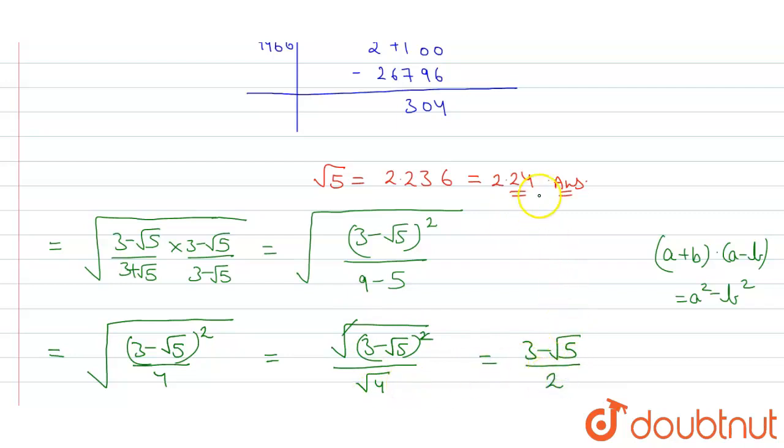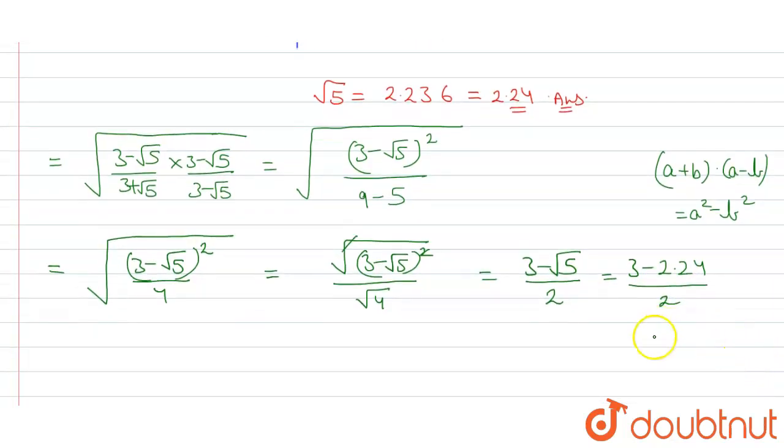Now we will put the value of root 5. 3 minus 2.24 upon 2. Now, 3 minus 2.24 is 0.76 upon 2. So, our final answer will be 0.38.